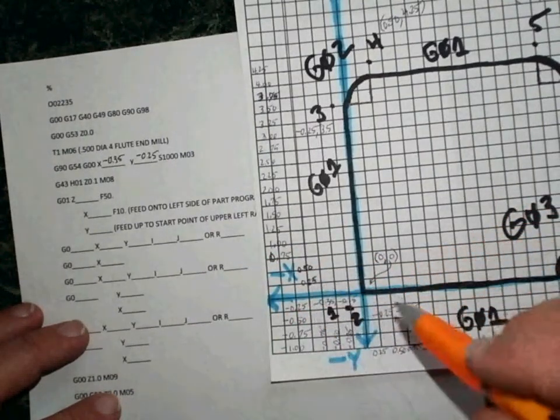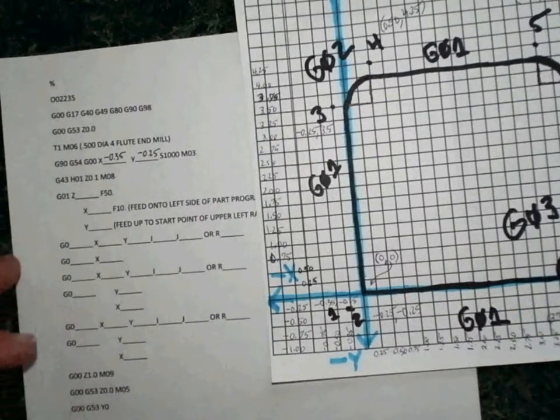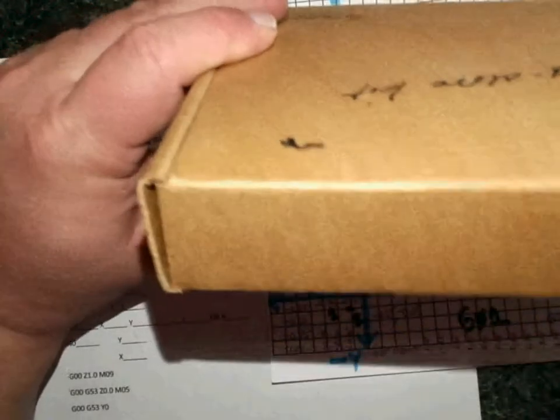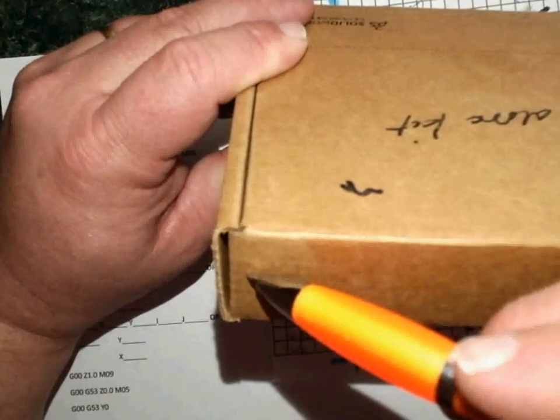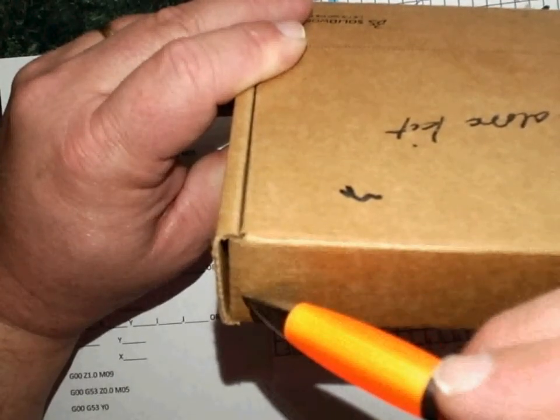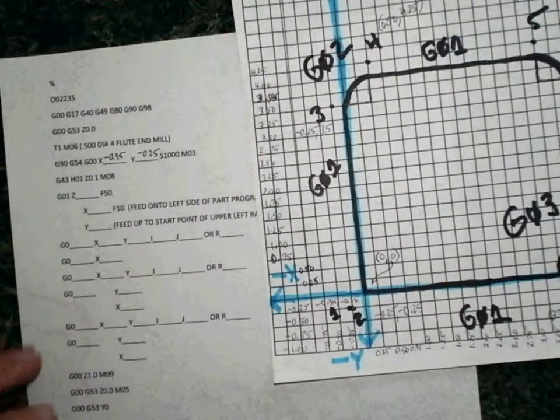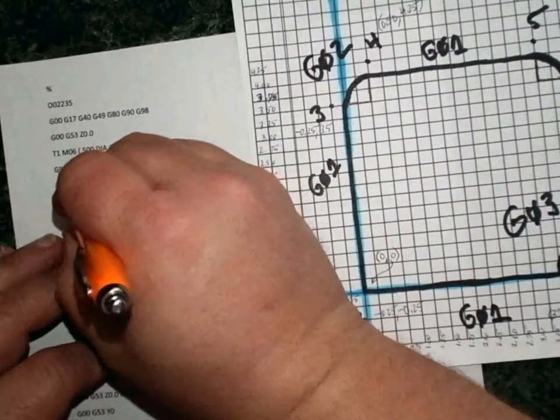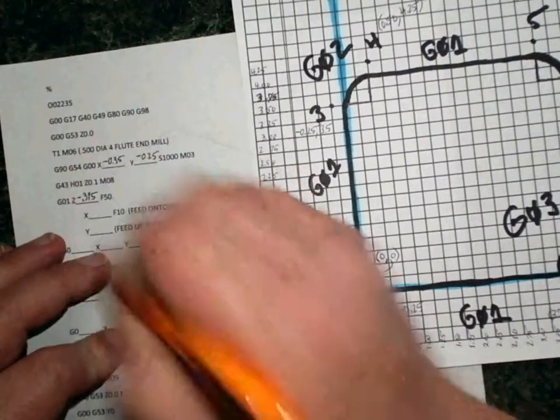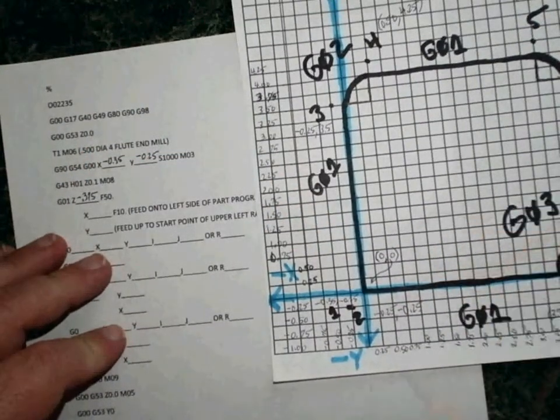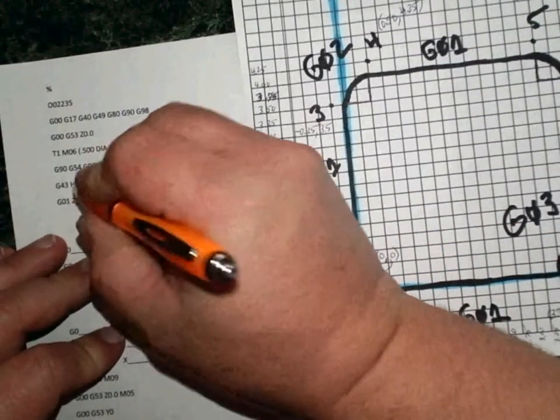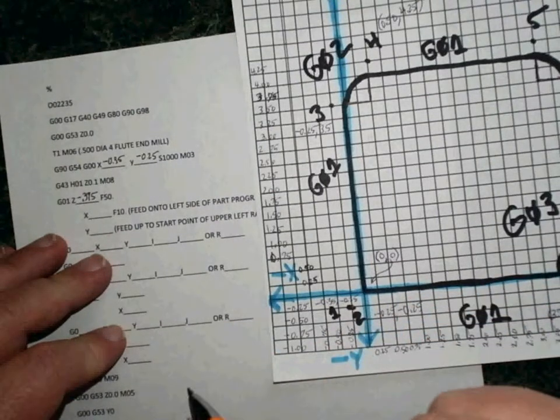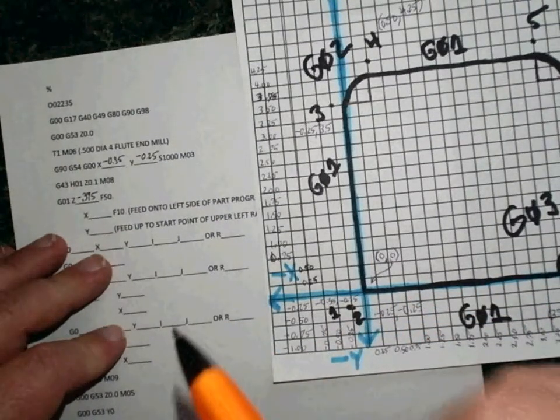The instructions in the assignment called for a depth of 0.375. Well, since the top of the material is at 0.0, and we want to cut down 0.375, that means on the Z-axis we're going in the negative direction. So this number would be a negative 0.375. That gets us down 375 thousandths from the top of the material and 375 thousandths down into the work.